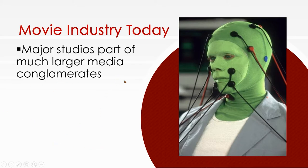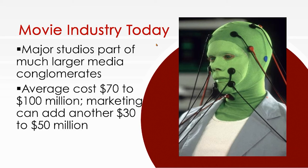Major studios are part of much larger media conglomerates today, just as with the music industry. The average cost of a small movie is still around $70 million, while a big movie like Avengers can be up to $300 million. Marketing can add another $30 to $50 million. So it is expensive to make a major two-hour-long film.